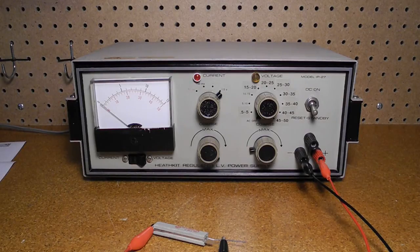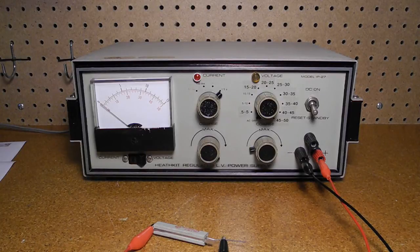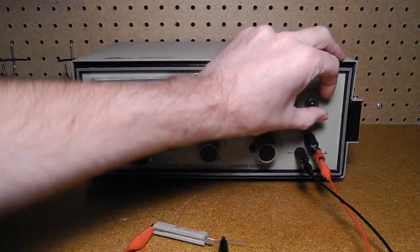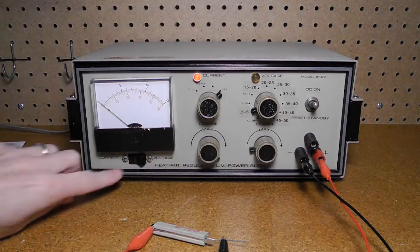Let's take a look at the power supply operating. Suppose we want to apply 12 volts across a load, in this case a 39 ohm power resistor. We turn the unit on and turn the mode switch to DC on. We set the meter switch to voltage.